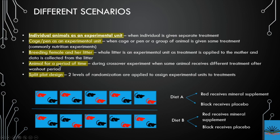In some experiments, the same animal is allocated to different treatments across time periods. These are called Latin square or crossover designs. For example, for one week an animal receives Treatment 1, the next week Treatment 2, and the next week Treatment 3, in a random order. In these cases, the animal for a particular period of time is considered the experimental unit.